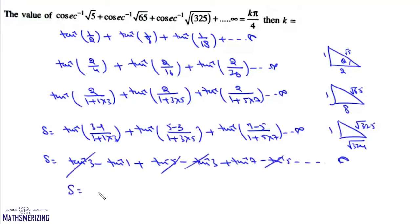So in the end, loosely speaking, we'll get tan inverse infinite minus tan inverse 1, which is pi by 2 minus pi by 4, and it is pi by 4. So the value of k will be simply 1.